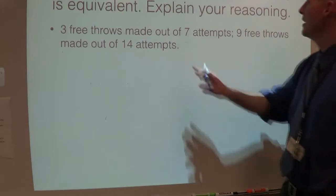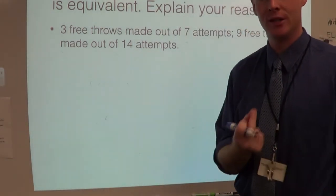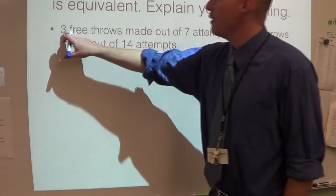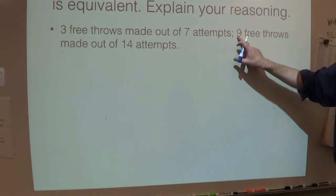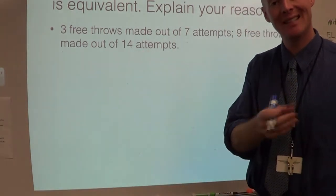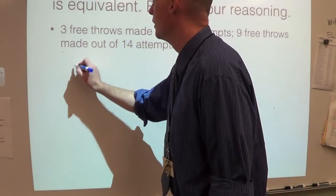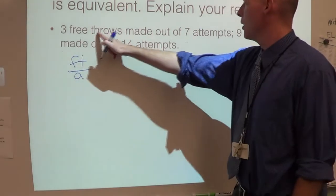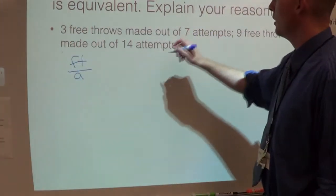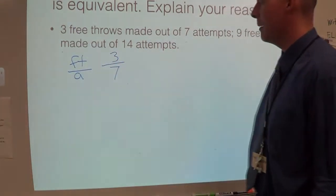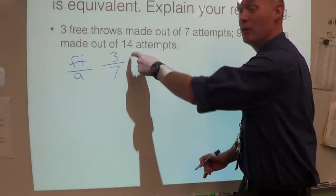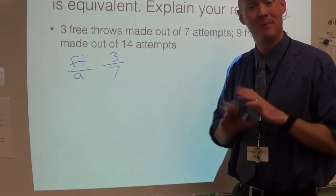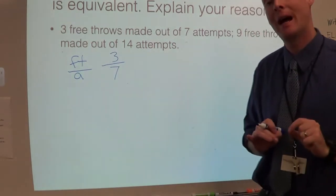Determine if the pair of ratios or rates are equivalent. Explain your reasoning. Now I'm going to show you how to use equivalent fractions. I use this when finding the unit rate is difficult, like with this one. Here I have three free throws made out of seven attempts, or nine free throws made out of 14 attempts. We just want to see — are these equivalent? I'm going to start word over word: free throws over attempts. Can you see why finding the unit rate would be difficult? Because you'd have to divide by seven, then do three divided by seven — a wacky looking decimal. So this is where equivalent fractions is a whole lot easier.